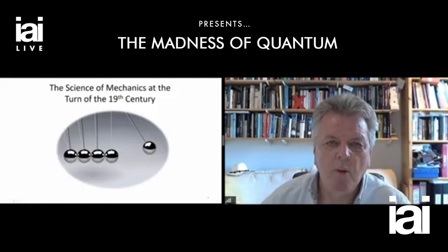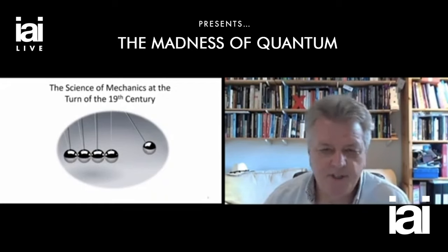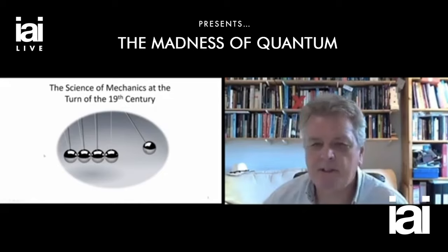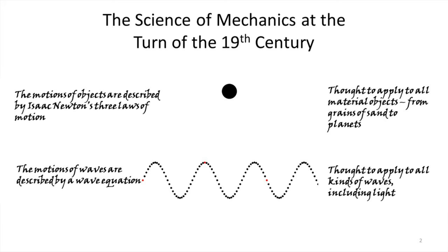Hopefully by the end you'll have some understanding of why quantum mechanics is not only obscure but as crazy as it seems. We're going to begin by looking at the science of mechanics around 1900. Physicists in those days had really two ways of looking at mechanics — simply the science of motion. There were two sets of theories: the motions of objects like a bouncing ball, a cannonball, a grain of sand, a planet, a star — all material objects were thought to be explained adequately by Newton's three laws of motion.